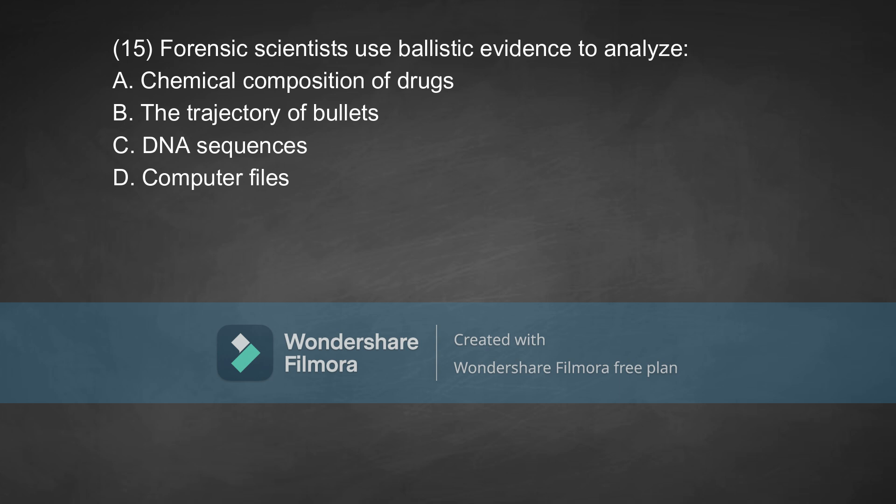Coming to the 15th question: forensic scientists use ballistic evidence to analyze — Option A, chemical composition of drugs. Option B, the trajectory of bullets. Option C, DNA sequences. Option D, computer files. The correct answer is Option B, which is the trajectory of bullets.